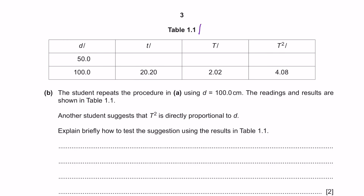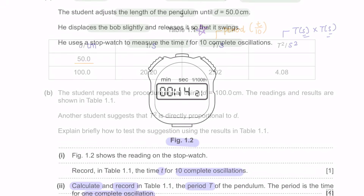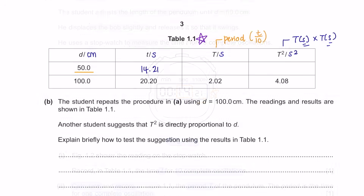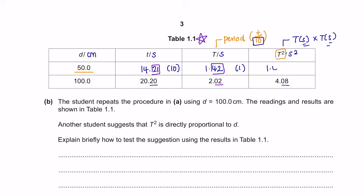All four parts are to be done on table 1.1. The units for distance is centimeters, for time is seconds. T is the period — the time taken for 1 complete oscillation — so it will be in seconds. T squared will have units of s squared. At 50 centimeters, the stopwatch read 14.21 seconds for 10 oscillations. Dividing by 10 gives 1.42 seconds. Answers are given to 2 decimal places. T squared is 1.42 × 1.42, giving us 2.02.